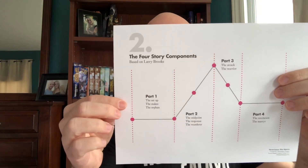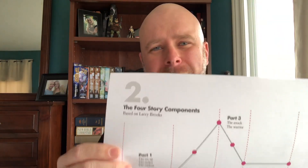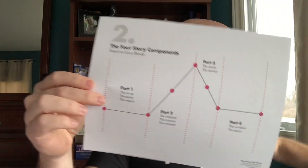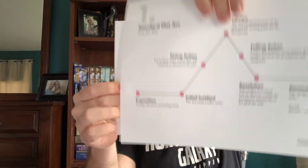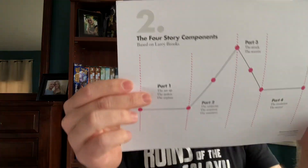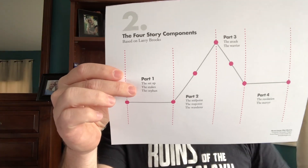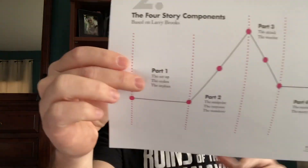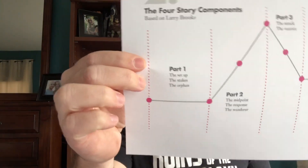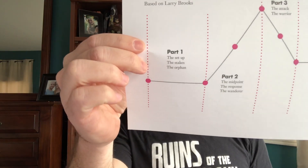The second layer of my matrix is what I call the four story components. This is based on work by the great Larry Brooks, and it comes from his book Demystifying Story. This is broken into four parts which kind of correlate to the first set, so they're meant to layer on each other. Part one is the setup — this is where we learn what the stakes are for the protagonist. And then the third component is where the protagonist acts like an orphan: they're lost, they don't have parentage, there's no sense of oversight. This doesn't necessarily mean genetically, but in terms of the character's attitude and how they feel in the world they live in.